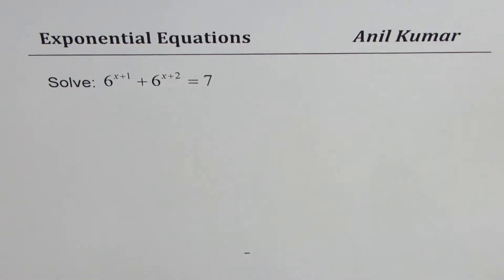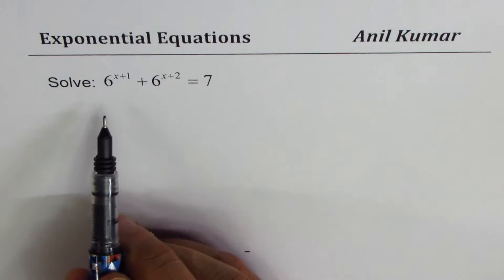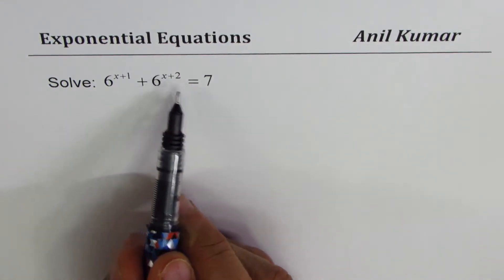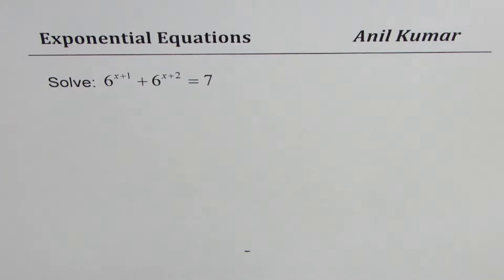I'm Anil Kumar. Let us solve the exponential equation 6^(x+1) + 6^(x+2) = 7. You can always pause the video, answer the question, and then look into my suggestions.